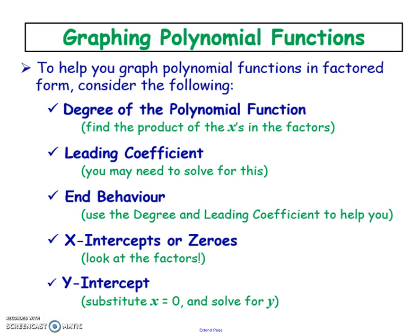Here are all the things you can use to create an accurate picture of your polynomial. The degree tells you whether your arrows go in the same or opposite directions and the general shape. The leading coefficient tells you the end behavior — whether it's pointing a certain way or the opposite. If the polynomial is factored, you can see the x-intercepts clearly; if not, you can see the y-intercept clearly from the constant term.